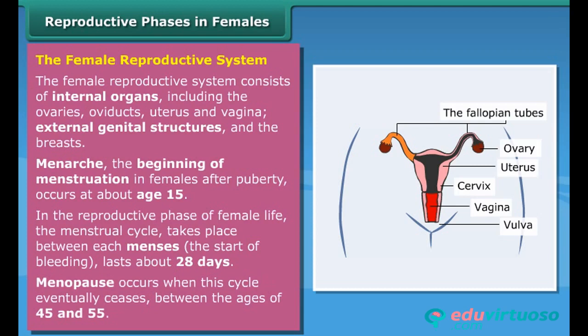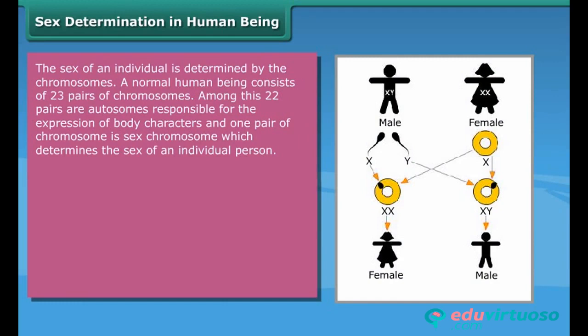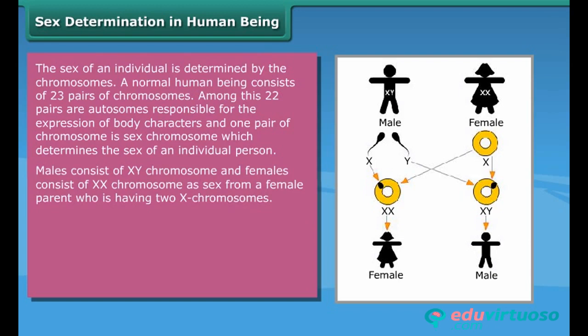Sex determination in human beings: the sex of an individual is determined by the chromosomes. A normal human being consists of 23 pairs of chromosomes. Among these, 22 pairs are autosomes responsible for the expression of body characters, and one pair of sex chromosomes determines the sex of an individual. Males consist of XY chromosomes and females consist of XX chromosomes.